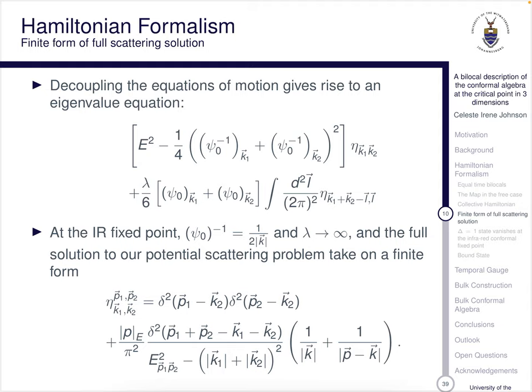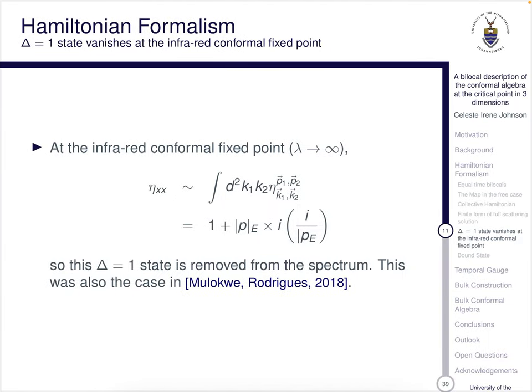Something very special happens. From that equation we get an eigenvalue equation. At the IR fixed point, the inverse of sin theta becomes 1 over 2 mod k and lambda goes to infinity. What's quite exciting is that the full solution to our potential scattering problem takes on a finite form. As lambda turns to infinity, that eta xx term in the interaction of our quadratic Hamiltonian actually goes to zero. This is a result that Malokwe and Rodrigues proved in 2018, that the delta equals one state is removed from the spectrum, absolutely in agreement with what Klebenov and Polyakov came up with in 2002.